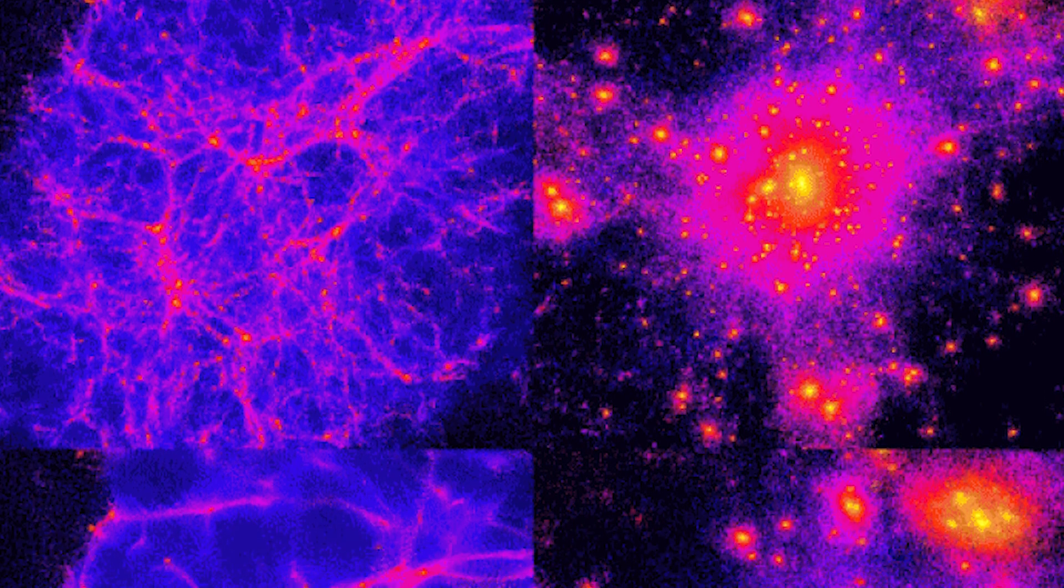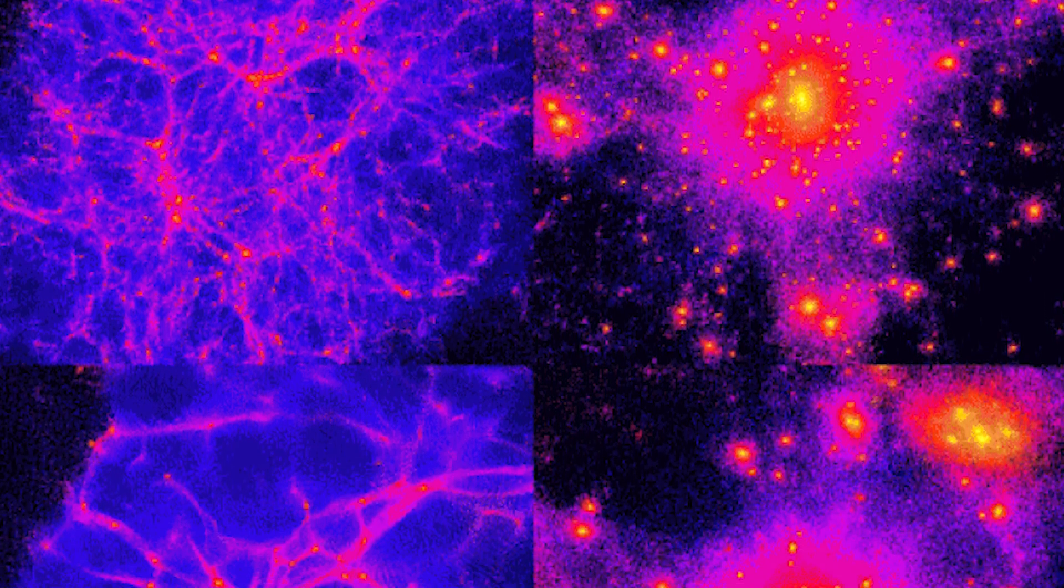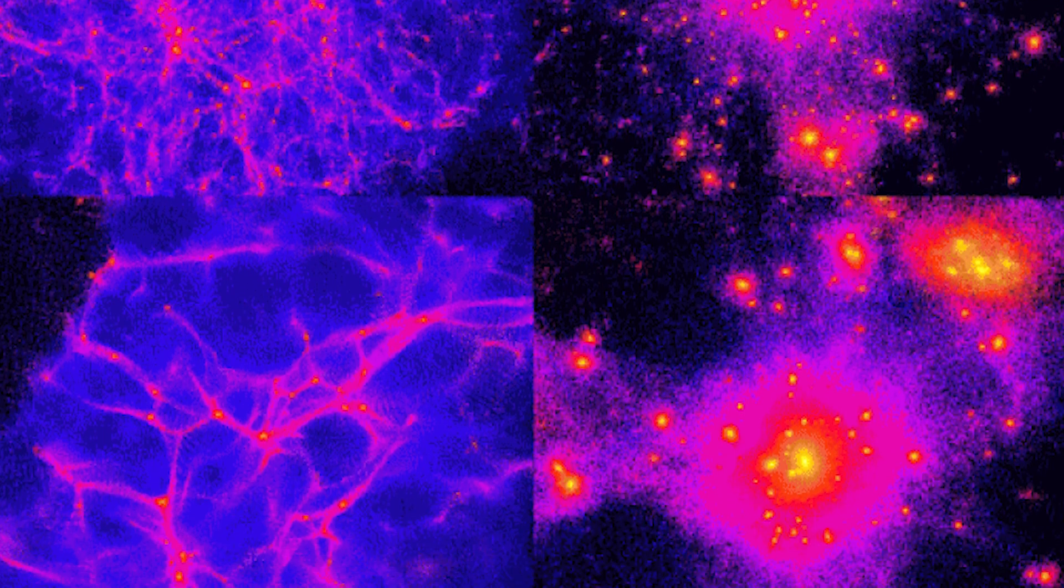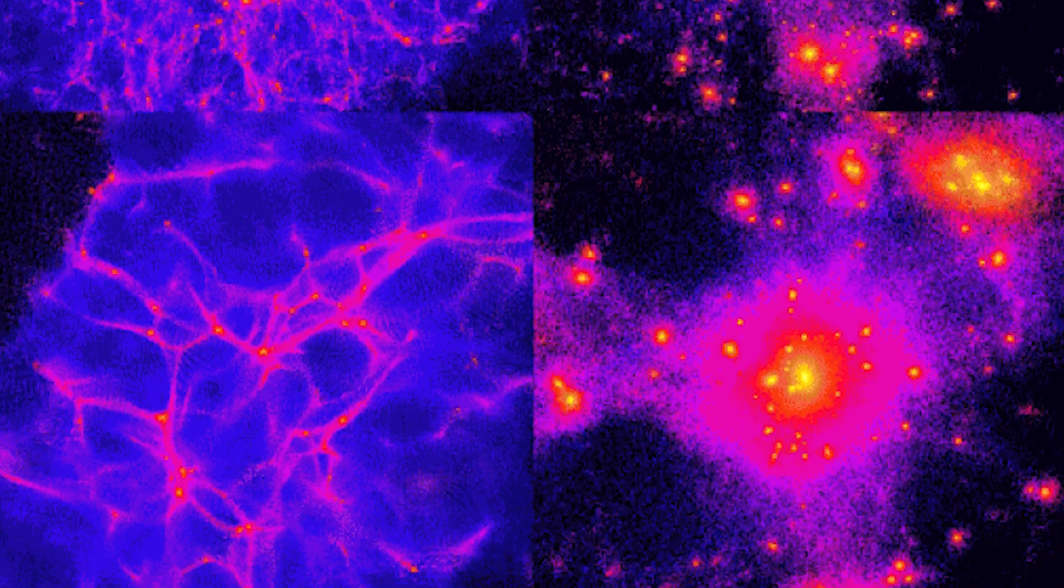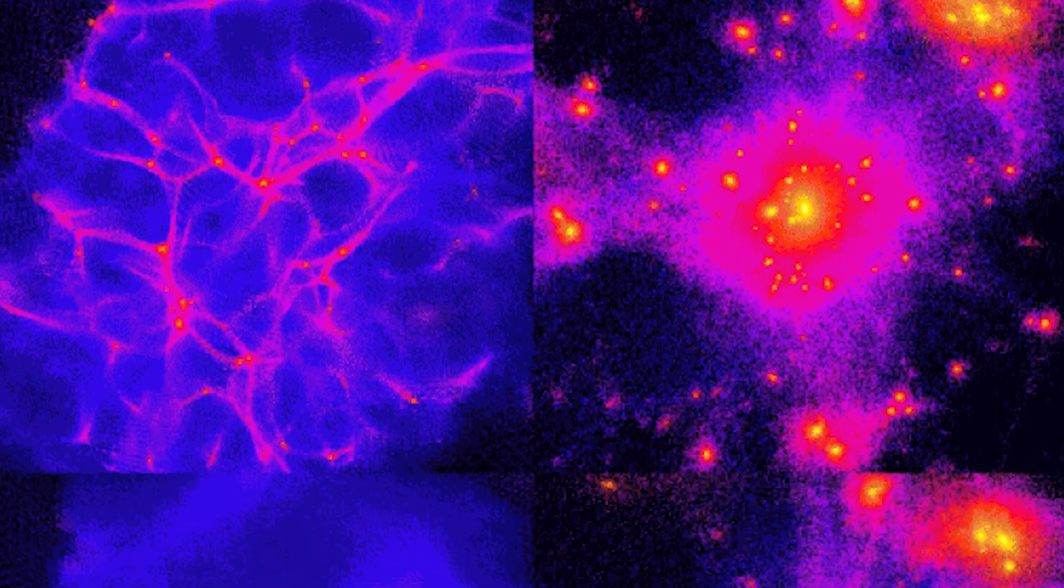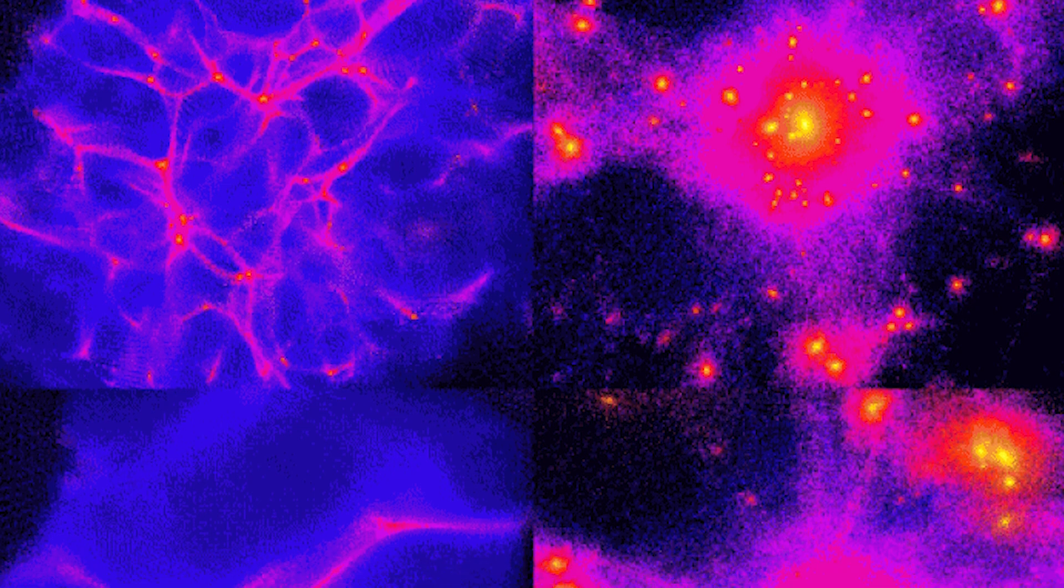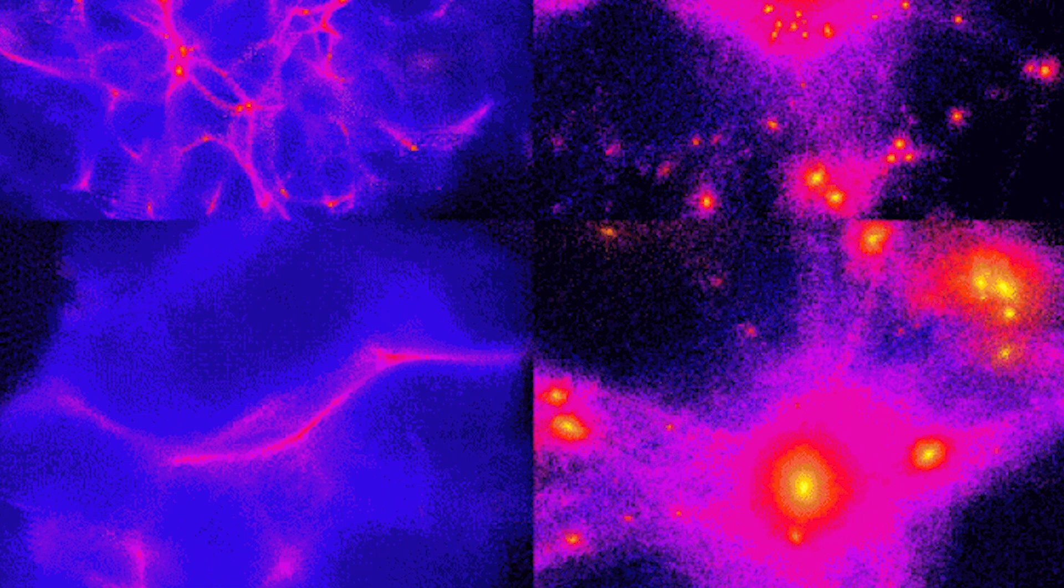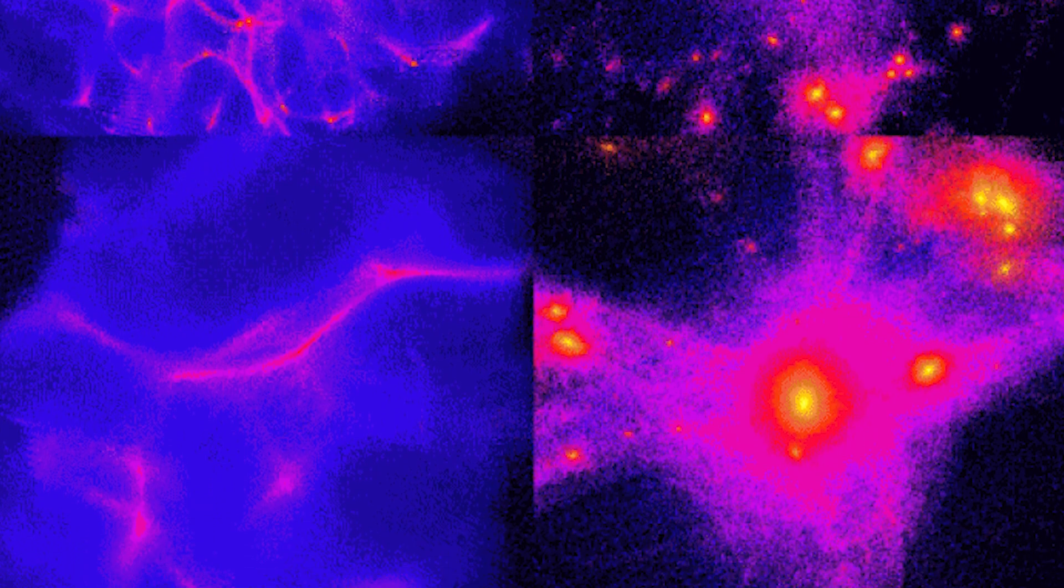In a cold, warm, and hot dark matter universe, the dark matter structures that form, left, and the visible galactic structures that result, right, are shown from the top down. Based on our observations, at least 98% plus of dark matter must be either cold or warm. Observations of numerous different aspects of the cosmos, on a variety of scales, all indirectly point to the existence of dark matter.